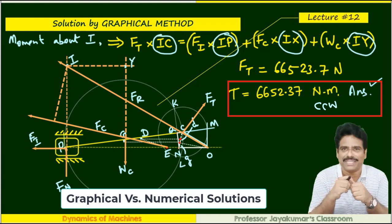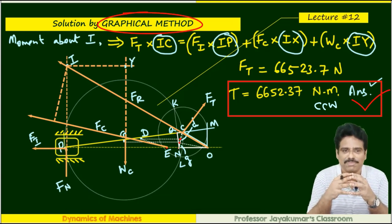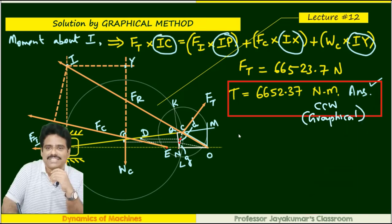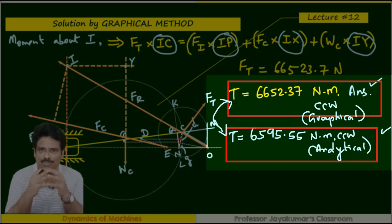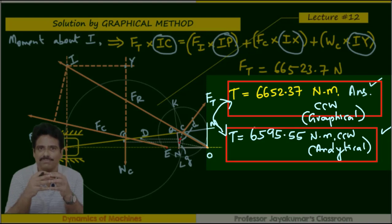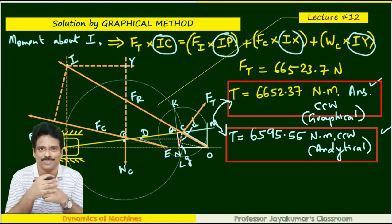Comparing results: the same problem solved by graphical method (Klein's construction) in the previous lecture gave 6652.37 N·m, while the analytical method gives 6595.55 N·m. There is a small difference. The reason: graphical method involves human practical error in construction, and in the analytical method some approximate expressions were used — for example, α_c was approximated. These sources of approximation account for the small numerical deviation between the two methods.